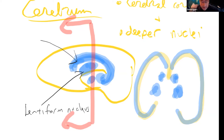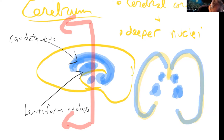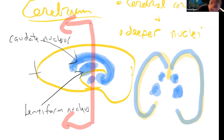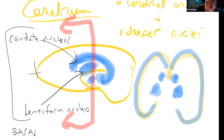The lentiform nucleus gets its name because it's kind of lens-shaped. The caudate nucleus — caudate means tail-like, it looks more like a big tail. The caudate and the lentiform are made out of subparts like the putamen and the globus pallidus, but for this class you don't need to know the details. The caudate and the lentiform together — I think we call it the basal nuclei. Basal meaning deeper down near the base. Nuclei — that's the definition of cell bodies in the CNS.